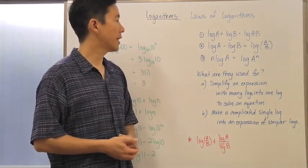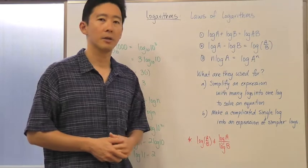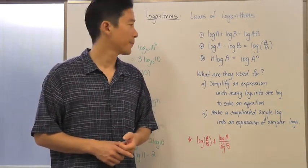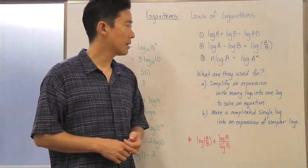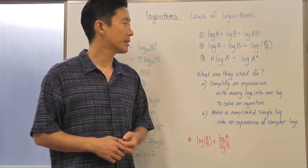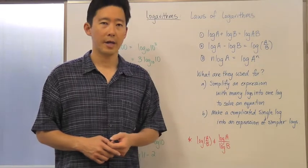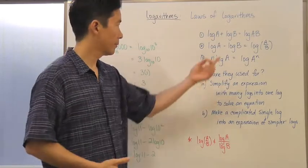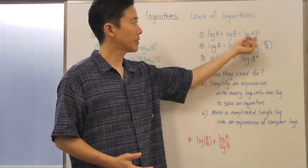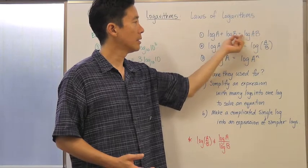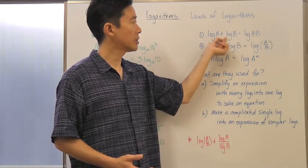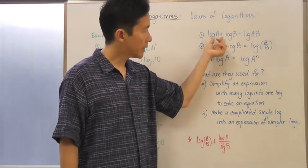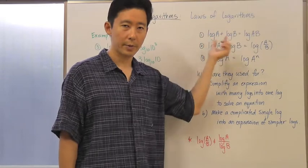Number two says if you have log a minus log b, that's the same as the log of a divided by b. And if you take n log a, that's going to be the same as log of a to the n. Remember with equality you can go either way — if you start with log of ab you can rewrite it as log a plus log b, since those two are equivalent forms.